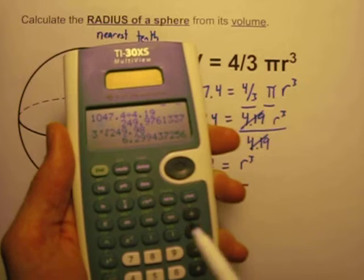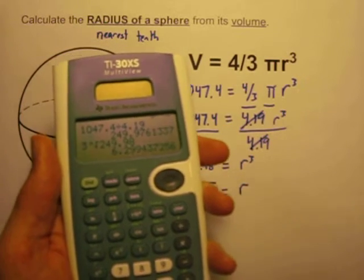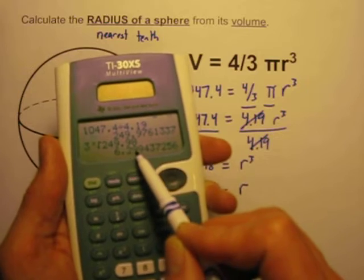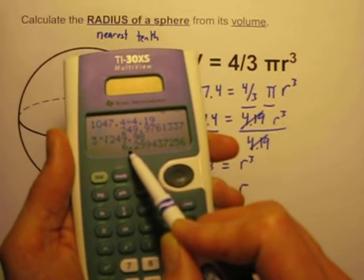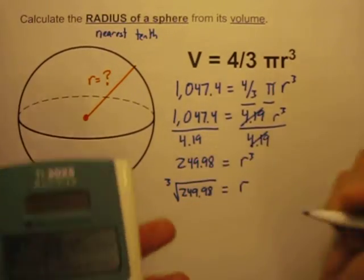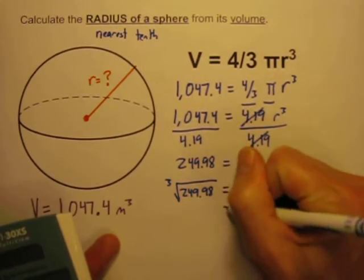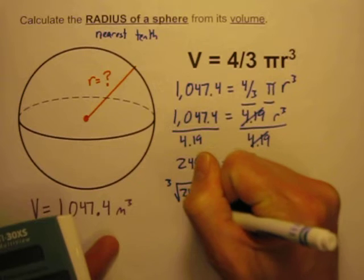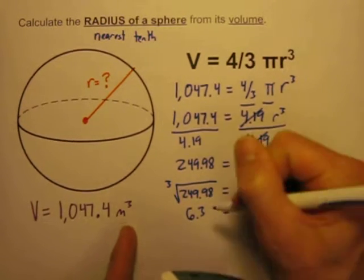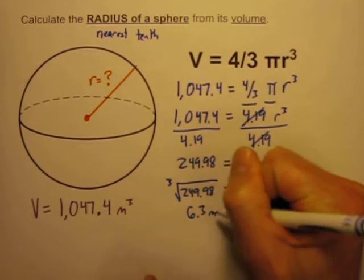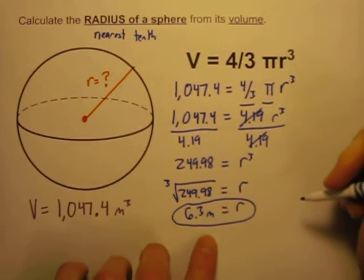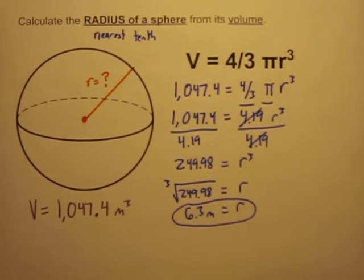And I'm going to round this also to the nearest hundredth place, and it looks like it's 6.299, so I'll round that up to 6.30. And actually, this is my final answer, so I can round that to the nearest tenth, so that's going to be 6.3, and since the volume is in cubic meters, this radius must be in meters. So that's what my radius would have to be in order to get that volume.